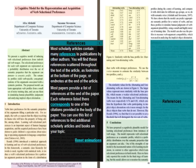The last section is references. Most scholarly articles contain many references to publications by other authors. You will find these references scattered throughout the text of the article, as footnotes at the bottom of the page, or endnotes at the end of the article. Most papers provide a list of references at the end of the paper. Each reference listed there corresponds to one of the citations provided in the body of the paper. You can use this list of references to find additional scholarly articles and books on your topic.